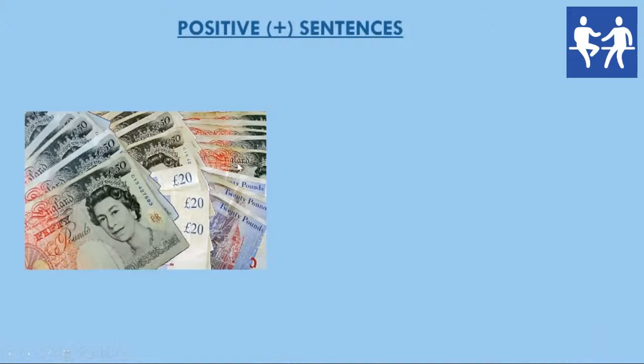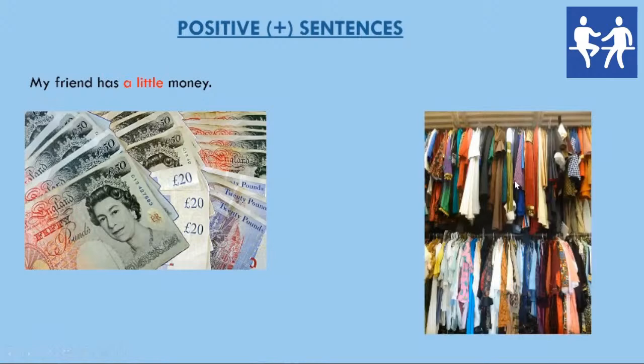So, here we have some money. This is actually quite a lot of money. But if we wanted to say we had a small amount of money, we could say: my friend has a little money. This, again, is quite a lot of clothes. But if we wanted to say we didn't have a lot of clothes, we could say: my friend has a few clothes.